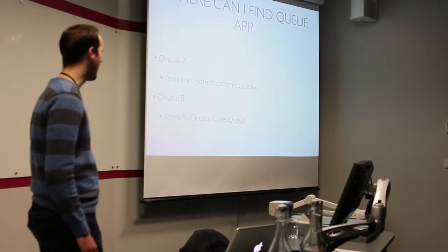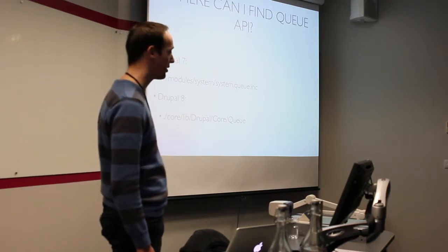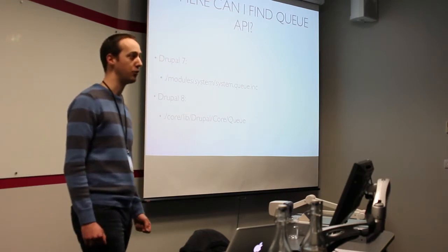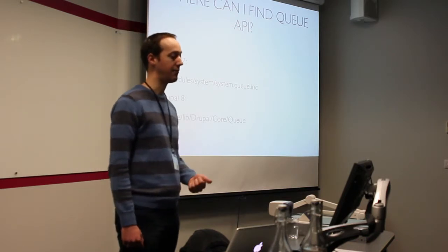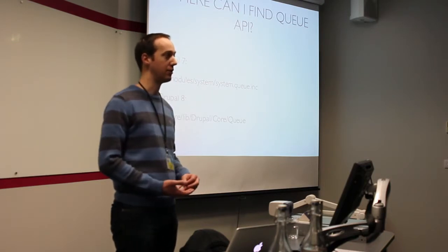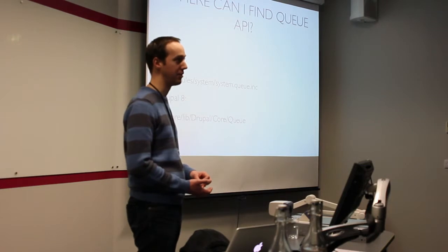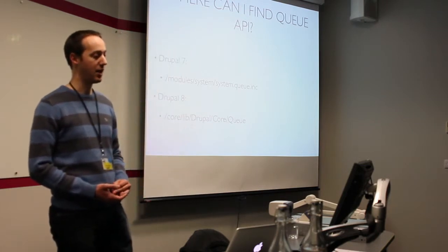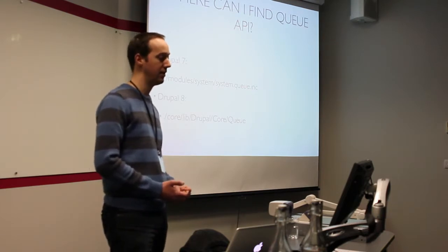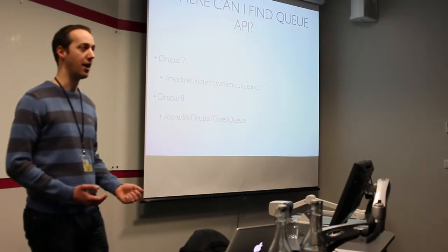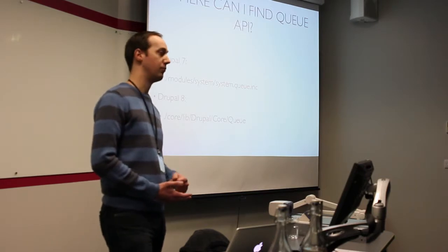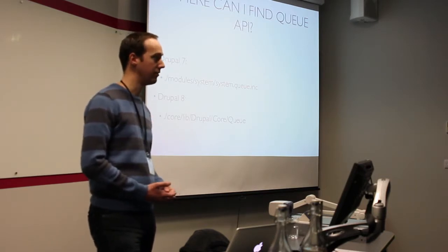If you want to look at the code: in Drupal 7, it's part of the System module — look in modules/system/system.queue.inc, which has all the queue classes and both implementations. In Drupal 8, PSR-0 auto-discovery means it's moved into the core lib folder at core/lib/Drupal/Core/Queue, following the one-class-per-file convention with separate files for Memory Queue, Database Queue, and Batch Queue.